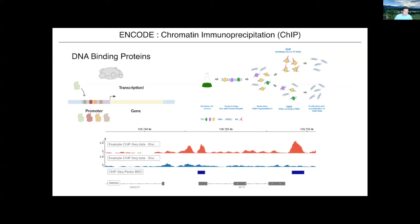What this data would sort of look like is here's an example of an experimental track in red where we have the antibody, and then blue where we don't have the antibody — so the blue would be the DNA that just comes down in this experiment by random. What we see in the red picture is there is a bump in the input where it's not specific and there's a peak there. The computer was smart enough to say there's too much input DNA here, this peak could be called by accident — but another peak where there's a decrease in the input is confirmed as a real peak.